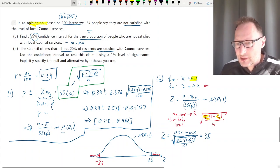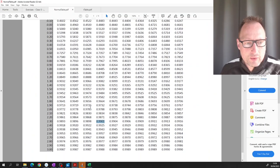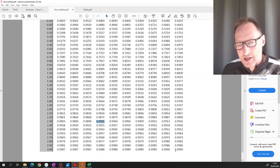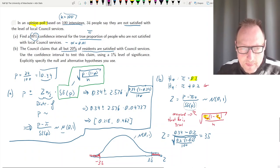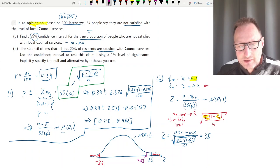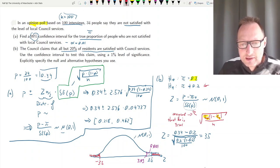If you now look at the standard normal table, we can try and find a value of 3.5. The largest value we get is 3.09 and here the tail size is 0.001. That means the red tail, all we know from the table is it is smaller than 0.001.